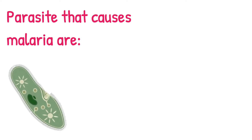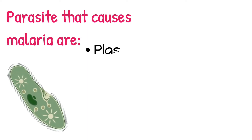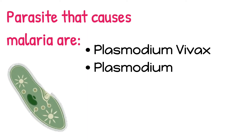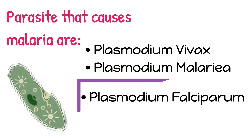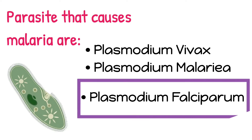For example, Plasmodium vivax, Plasmodium malariae, and Plasmodium falciparum are the various species that cause malaria in humans, out of which Plasmodium falciparum is the most violent and life-threatening.